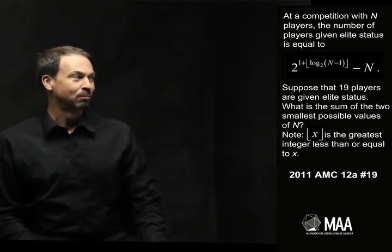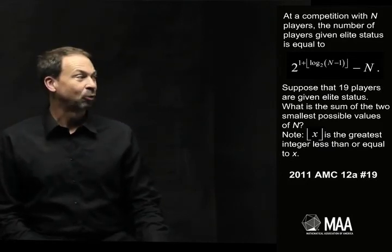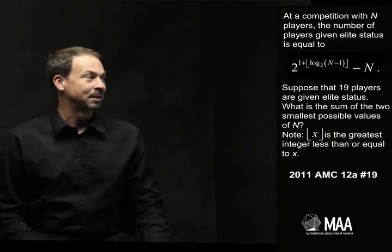What is the sum of the two smallest possible values for N? And there's an explanation. The square bracket business of X is the greatest integer less than or equal to X.